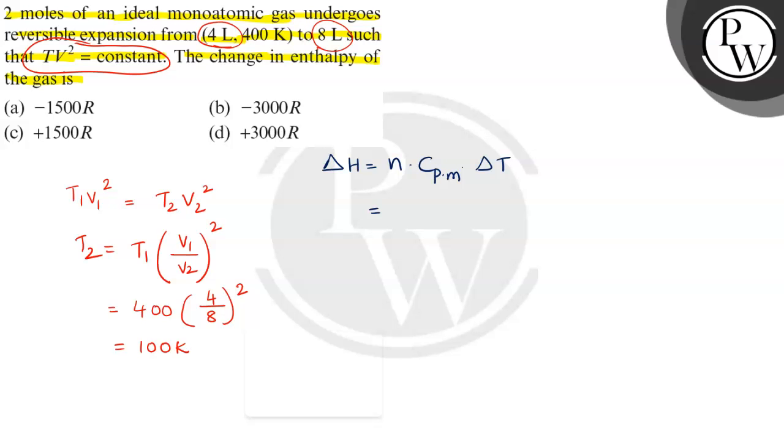N is the number of moles, initially 2 moles. So 2 times Cp, molar heat capacity, times the difference of temperature T2 minus T1.